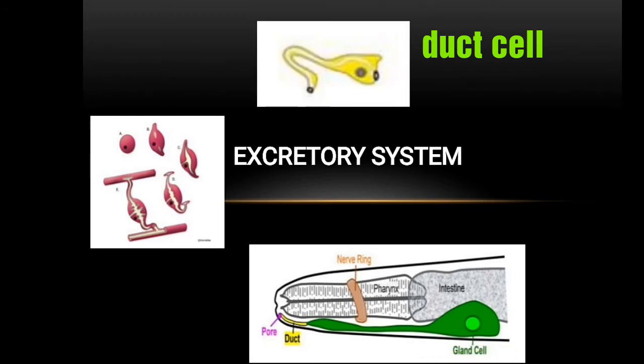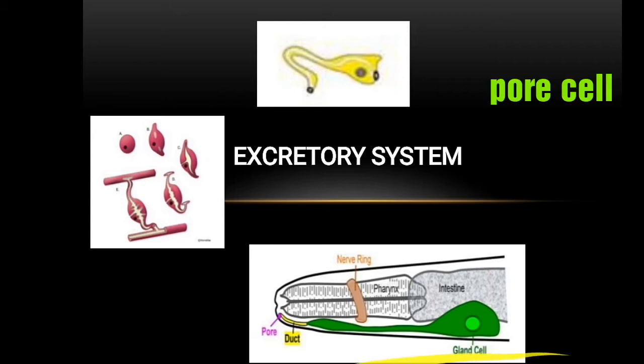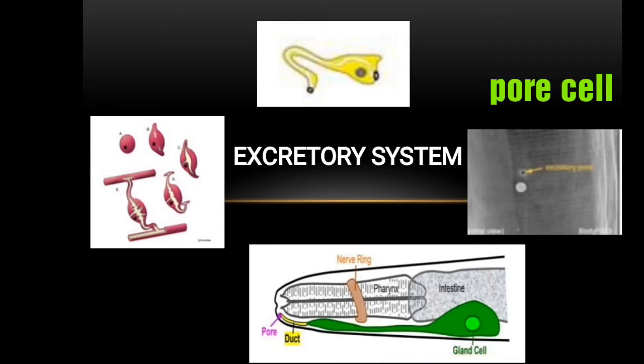Next is the duct cell, which has a looped-shaped body — one side connects to the excretory cell and the other side to the pore cell. Next is the pore cell, which is a special transitional epithelial cell that opens to the exterior via the excretory pore.